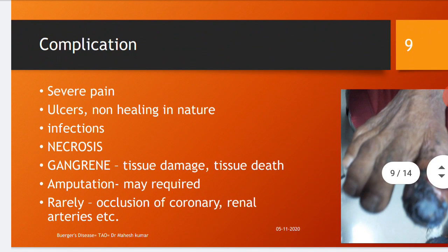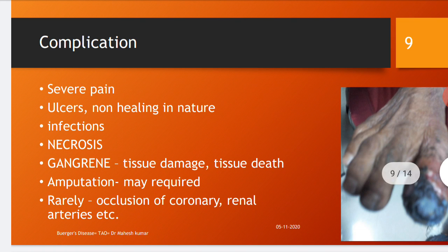Complications of Buerger's disease: patients may develop severe pain, non-healing ulcers, infections, necrosis, gangrene or tissue death, and may ultimately require amputation to save their life. Rarely, occlusion of the coronary artery and renal artery is also seen.